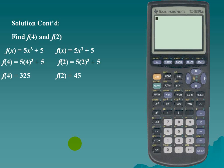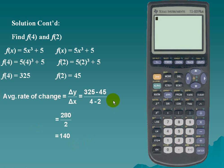So putting in our values for f(4), f(2), x₂, and x₁, we have the average rate of change formula which simplifies down to 140.